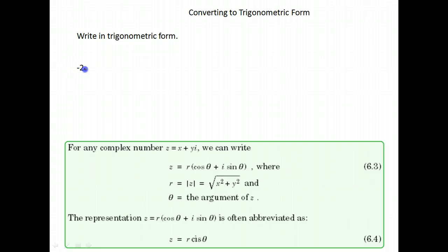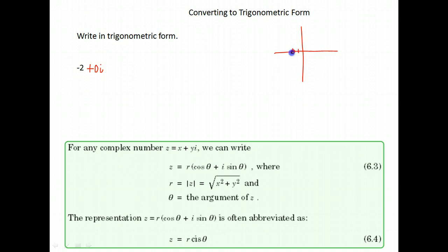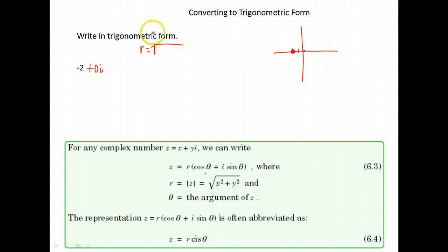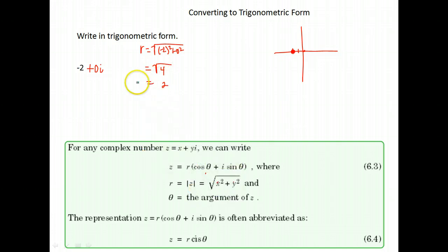Now let's write negative 2 in trigonometric form. It hardly looks like a complex number, but the imaginary part is just 0. Graphing it: go 2 to the left, up and down 0, so we're on the negative real axis. To find r, we take the square root of negative 2 squared plus 0, which is the square root of 4, so r equals 2.